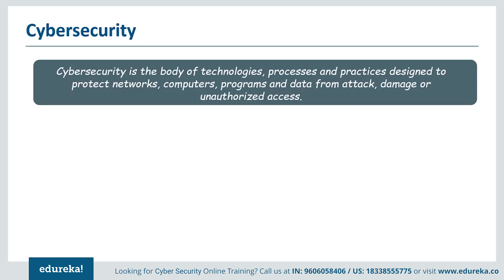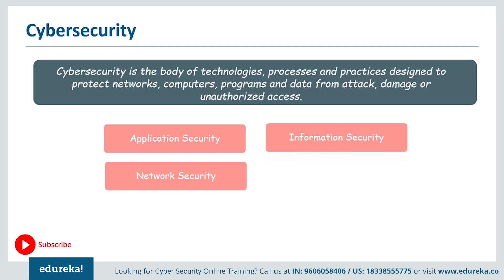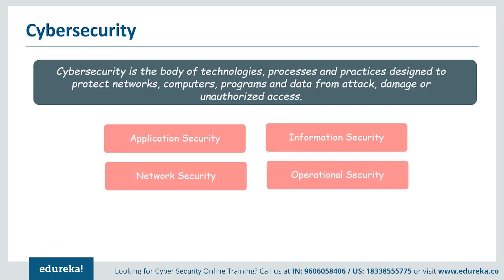After all, this is what the criminal wants — the data. The network, servers, computers and other online gadgets are just mechanisms to get this data. Ensuring cyber security requires the coordination of efforts throughout an information system, and this includes application security, which mainly focuses on keeping software and devices free from cyber threats. Then there is information security, which is protecting the integrity and privacy of data, protecting organizations from possible data breaches. And then there is network security — the practice of securing a computer network from intruders, whether targeted attackers or simple malware.